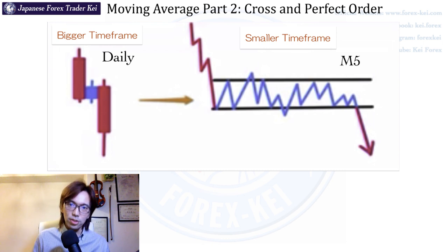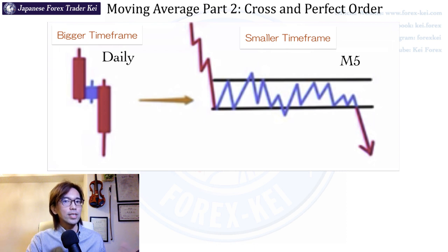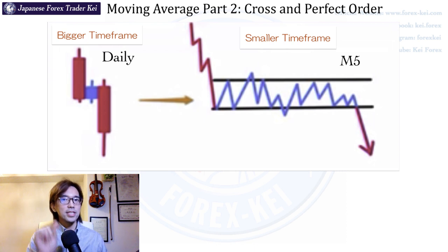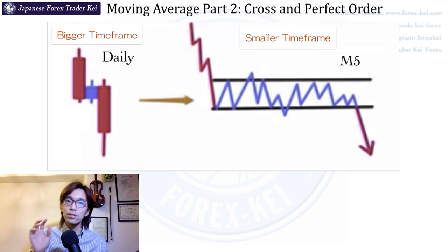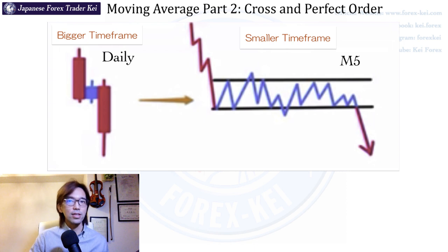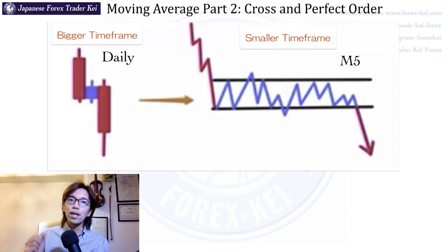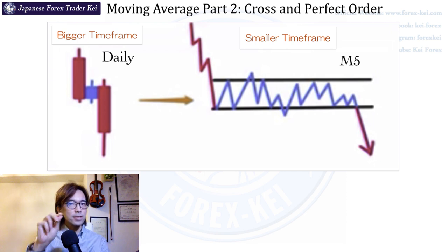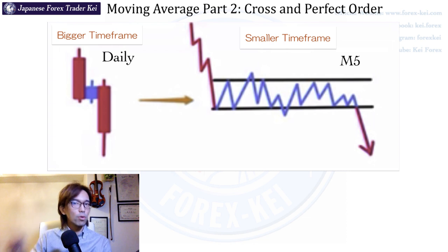So in the daily chart on the left, previously the market kept going down, and on the blue candlestick you can see that the market went into a range for a day. And when you zoom in, it actually looks like this on the 5-minute time frame. The market goes up and down for a day here, and after some time, the market breaks the range downwards and keeps its bearish momentum.